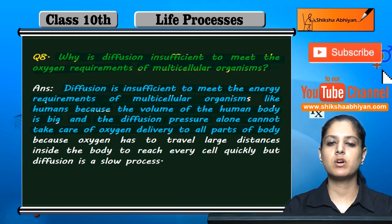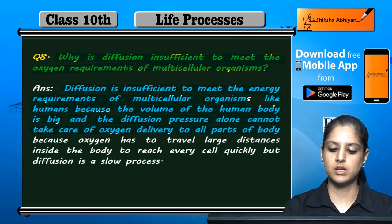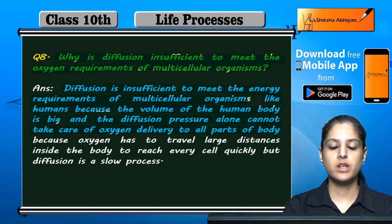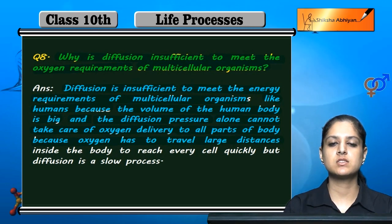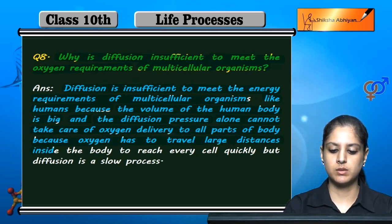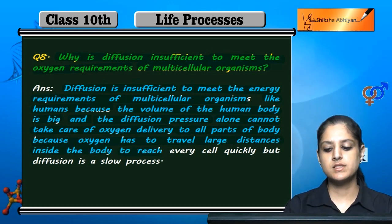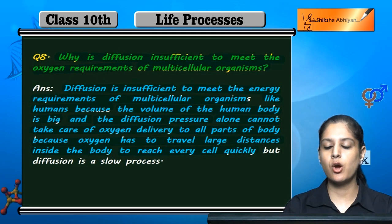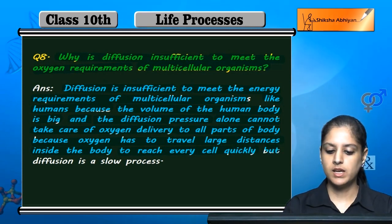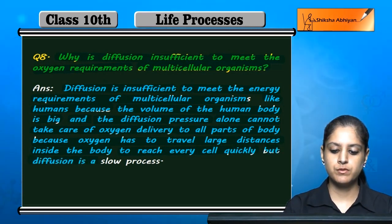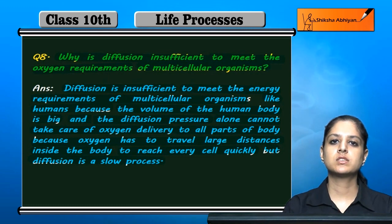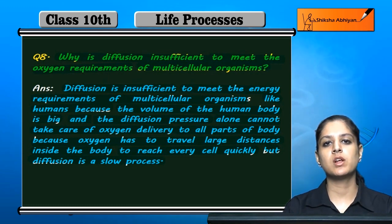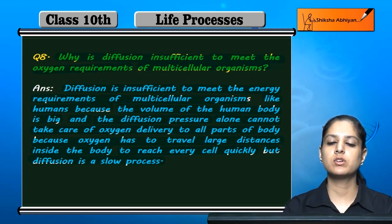Diffusion pressure is used to transfer oxygen to the body. But oxygen has to travel a large distance in the body, and every cell has to be reached very quickly. However, diffusion is a slow process. So if oxygen is late reaching any cell, it can damage the body.